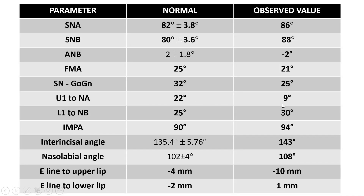Upper incisor to NA indicated retroclined upper incisors. Lower incisor to NB angle indicated proclined lower incisors. The interincisor angle was increased, confirming that retroclined incisors were present. Nasolabial angle was slightly increased, and E-line to upper lip was minus 10 mm, indicating that the upper lip was retrusive and backwardly placed.